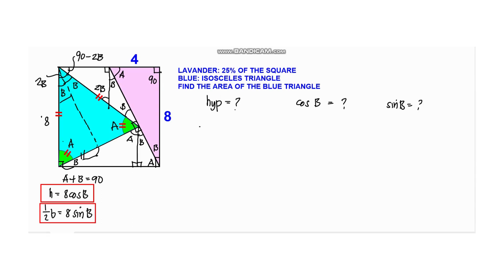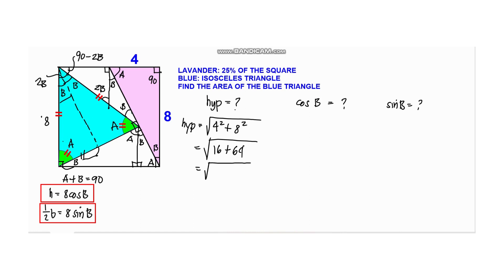Next we need to find the values of the hypotenuse, cosine of angle B, and sine of angle B. For the hypotenuse, we have the square root of 4 squared plus 8 squared, which equals the square root of 16 plus 64, which is the square root of 80. And 80 can be written as the square root of 16 times 5, which simplifies to 4 square root of 5. That is the hypotenuse.